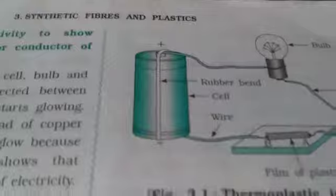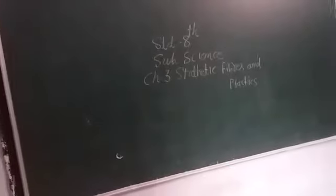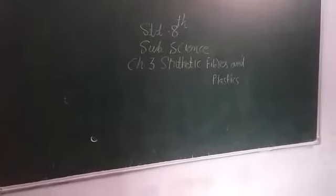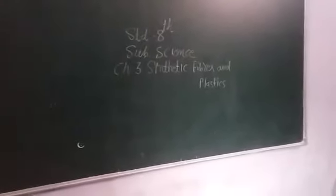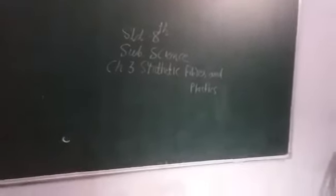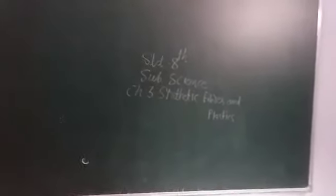Which fiber is known as artificial silk? A rayon, B acrylic, C nylon, D terylene. So the answer is A rayon.